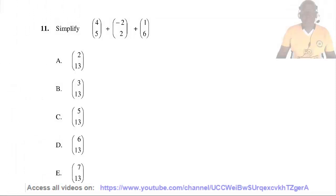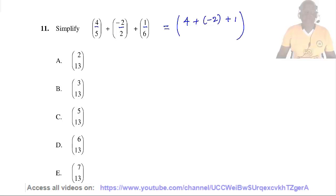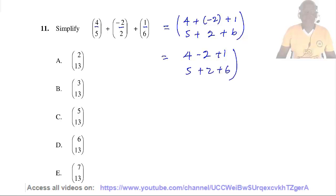Question 11: Simplify the vector (4, 5) + (−2, 2) + (1, 6). We add the x-components: 4 − 2 + 1 = 3, and add the y-components: 5 + 2 + 6 = 13. So the result is the vector (3, 13). The answer is B.